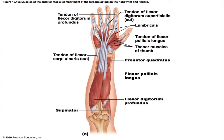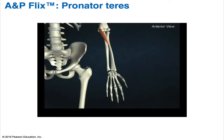The pronator quadratus is the deepest muscle of the distal forearm, passing downward and laterally. It is the only muscle that arises solely from the ulna and inserts solely into the radius. Its origin is the distal portion of the anterior ulnar shaft, and its insertion is the distal surface of the anterior radius. It is innervated by the median nerve. Its action is that it is the prime mover of forearm pronation; it also acts with the pronator teres and helps hold the ulna and radius together.